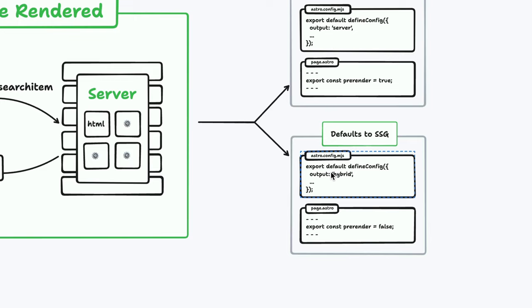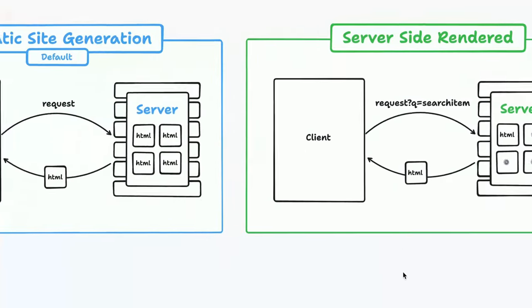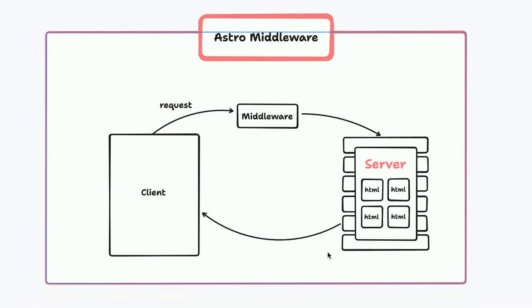Before we look at the code, let me talk about two other concepts related to routes. There's something called middleware — fairly new in Astro. Basically, you can have middleware that will intercept requests, and this works with both statically generated sites and server-side rendered sites. It processes that in-between step and can inject things into the final page itself. It's another way to intercept and work with routes, but it's technically different than these rendering strategies.